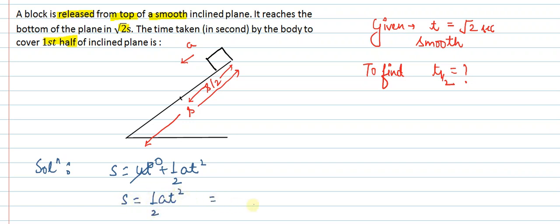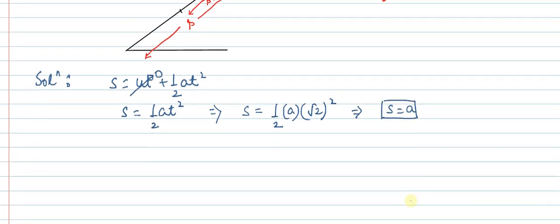Let's put the value of t here. We will get s equals half into a into root 2 squared, which will give me s equals a.